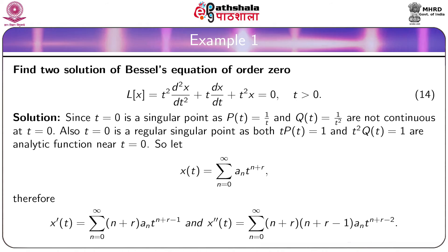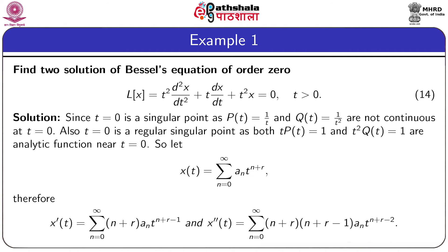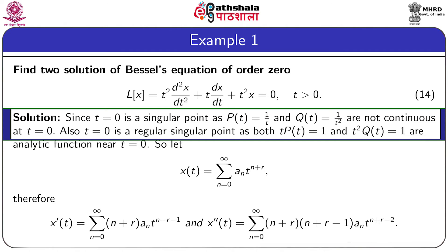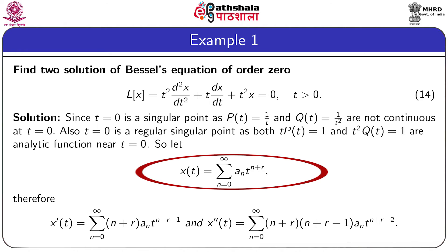We use the Frobenius method step by step. Since t = 0 is a singular point because p(t) = 1/t and q(t) = 1/t² are not continuous at t = 0, but t = 0 is a regular singular point since both t·p(t) = 1 and t²·q(t) = 1 are analytic near t = 0. So we assume the solution x(t) = Σ(n=0 to ∞) aₙt^(n+r).